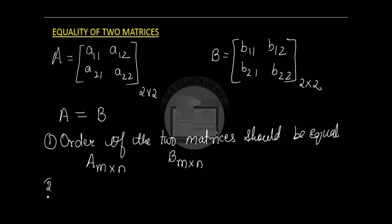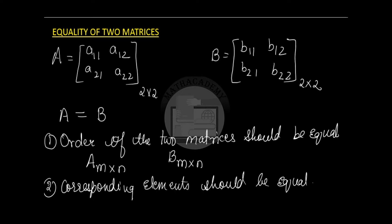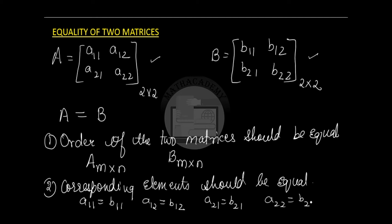The second condition is that the corresponding elements should be equal. By corresponding elements we mean the elements at the same position in both matrices. So if we look at matrix A and matrix B, A11 should be equal to B11 — these are the corresponding elements. A11 is in the first row and first column and similarly B11 is in matrix B in the first row and the first column. A12 should be equal to B12, A21 should be equal to B21, and A22 should be equal to B22. If that is the case, then we say that the two matrices A and B are equal matrices.